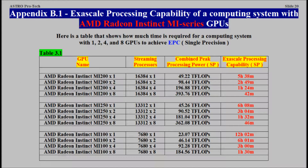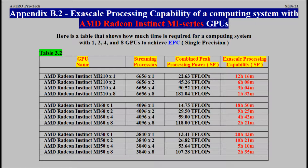Appendix B1: Exascale Processing Capability of a Computing System with AMD Radeon Instinct MI-Series GPUs. Appendix B2: Exascale Processing Capability of a Computing System with AMD Radeon Instinct MI-Series GPUs.